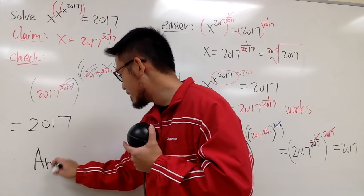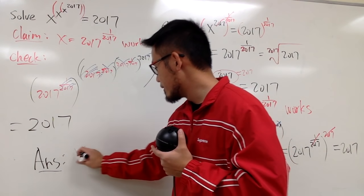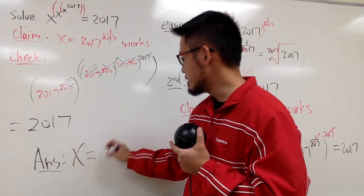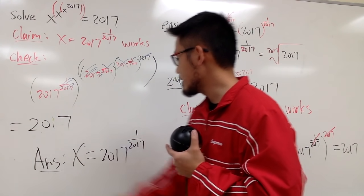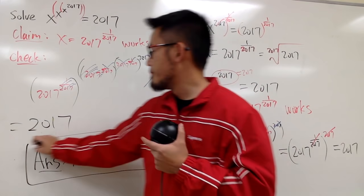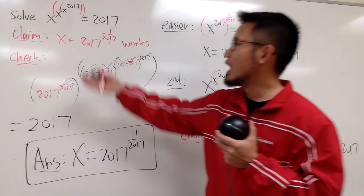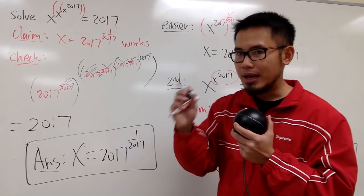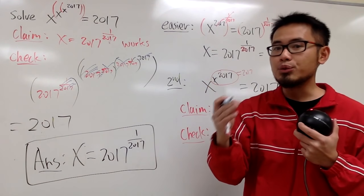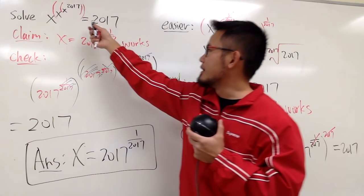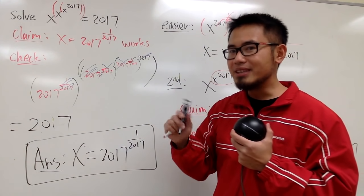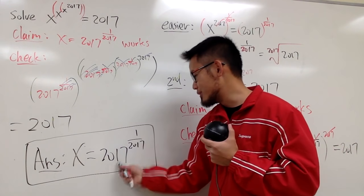So, the answer is equal to x is 2017 raised to the 1 over 2017. And yes, it doesn't really matter how many x that you have, x to the x to the x to however many that you would like, and then, at the end right here, it's 2017, and that's equal to 2017. The answer to that equation is equal to this right here.